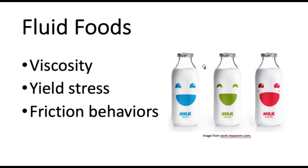We can look at friction behaviors too, and this will pick up some things that viscosity and yield stress measurements can't tell us. Friction may be able to tell us you've got some particles in this particular drink. Maybe we have a chocolate milk with some really big cocoa particles and it's giving us kind of a chalky or gritty mouthfeel — and that's not great for chocolate milk. So we can measure the friction, and the friction can pick up those particles and tell us something about our food.